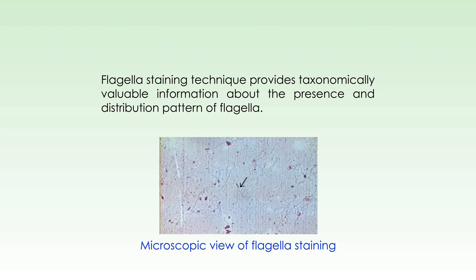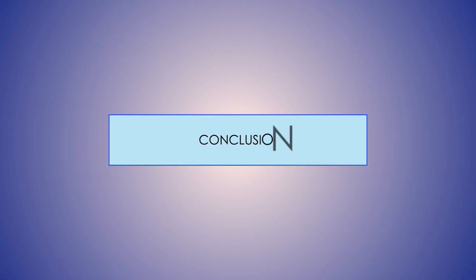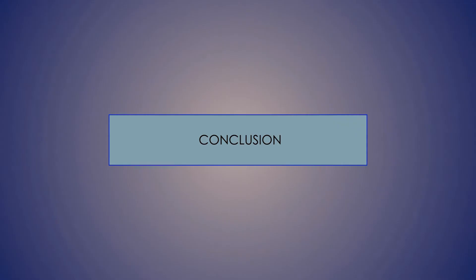Finally, the cells are treated with methylene blue which stains the cell. Under the microscope, flagella appear red and the bacterial cells appear blue in color. Flagella staining technique provides taxonomically valuable information about the presence and distribution pattern of flagella. That concludes the discussion on types of stains and different staining techniques used in observing microbes. Bacteria are so small that they are visible only under the microscope; however, magnification alone does not provide sufficient clarity, and hence bacteria must be stained before observation. By using various staining methods, it is possible to identify structural features that help in classifying bacteria.